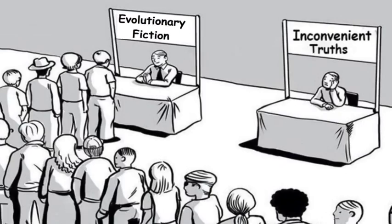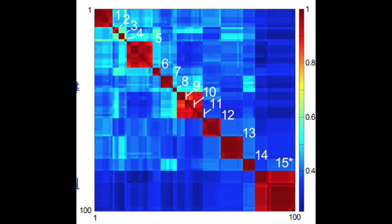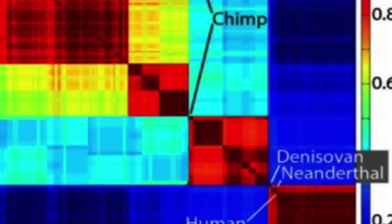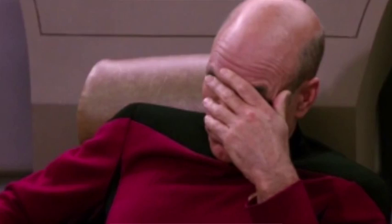Just look at this chart — this is what related species look like using a heat map. Now look at where the chimp falls in comparison to humans: not even aligned at all. You know why there are so many base pair differences? Because we're not the same species. It's that simple. Humans have never speciated, and there is no way around this new evidence.